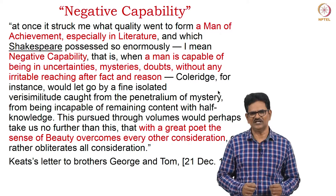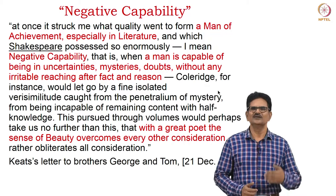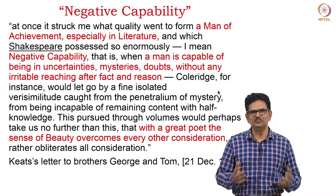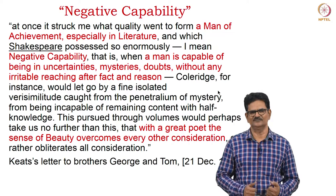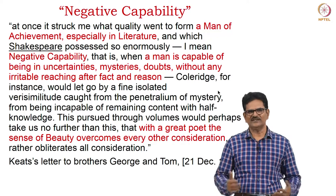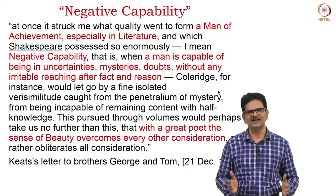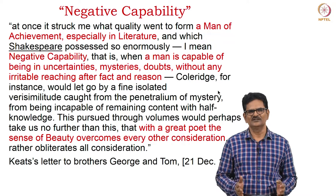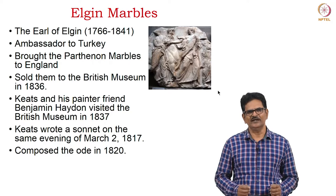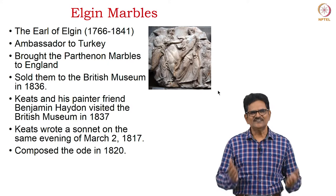From this concept of negative capability, we understand that Shakespeare is a great poet, Keats is a great poet — all poets who can be in uncertainties without irritable reaching after fact and reason are great poets. Therefore, for poets like Keats, beauty is the most important feature in life and art. His 'Ode on a Grecian Urn' deals with the theme of beauty. Keats was deeply interested in Greek art and culture.